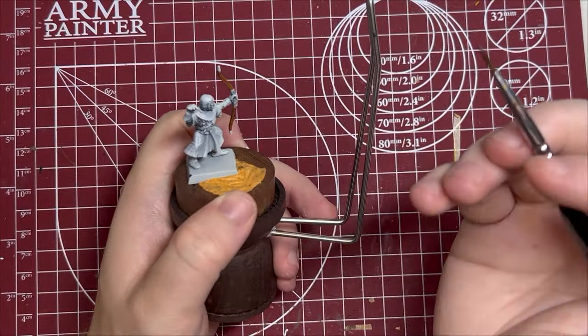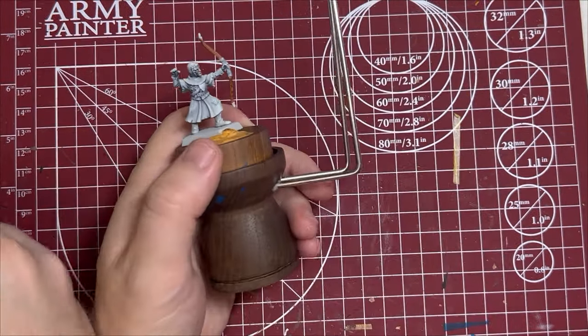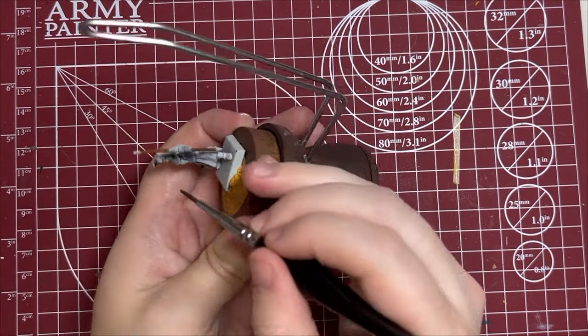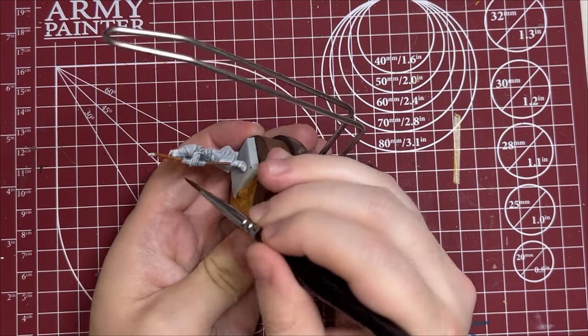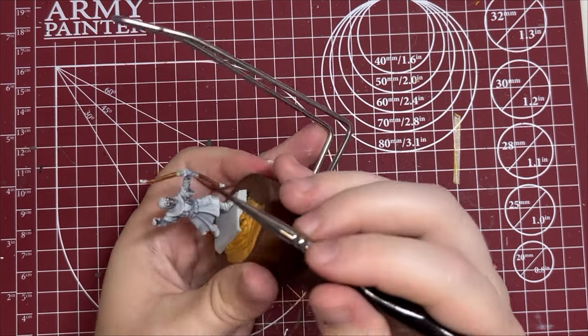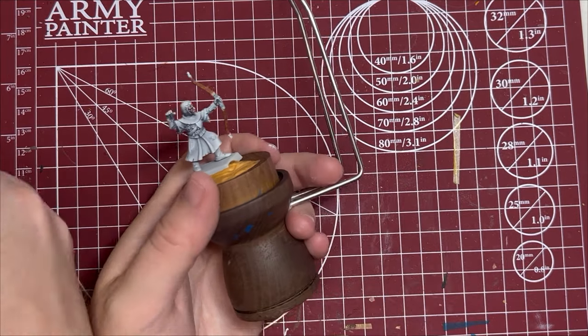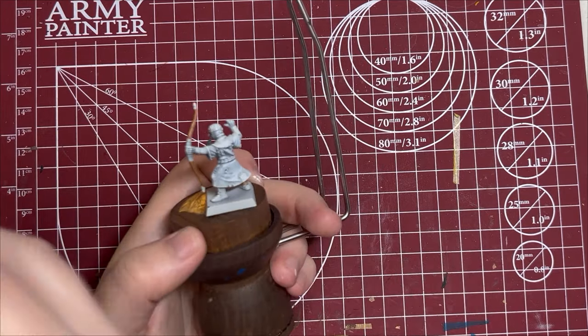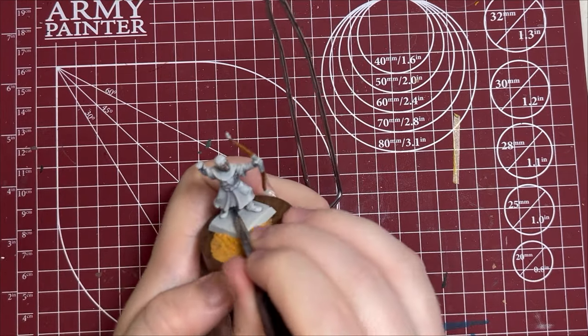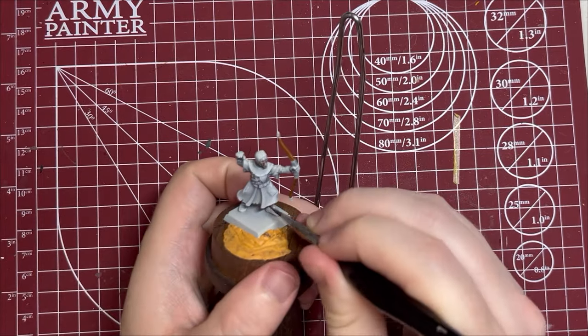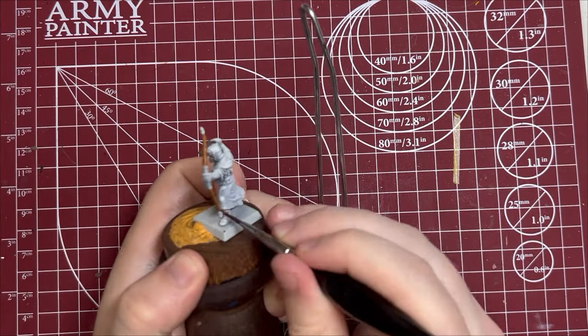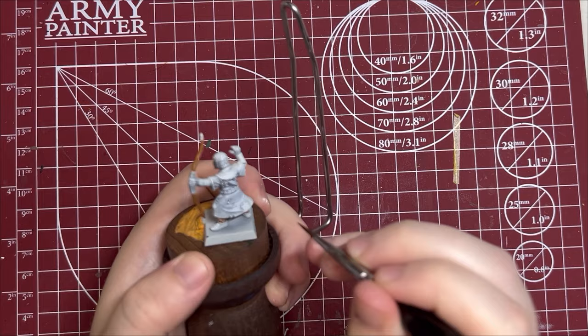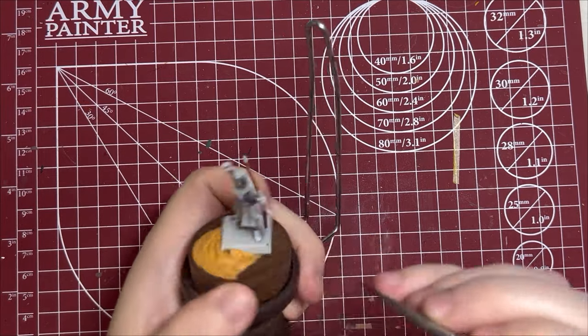Now we're going to take some Guilliman's Flesh, another Citadel paint, and we're going to do his flesh. Now the great thing about this paint is you can use contrast medium to make the darkness lighter or darker depending on what you're going for. I think it's really nice if you have a regiment of soldiers to have a lot of different various skin tones. But for this one I'm just using the tone straight out of the pot, just being careful not to let it pool too much. Put his face there and then we'll go down here into his legs.